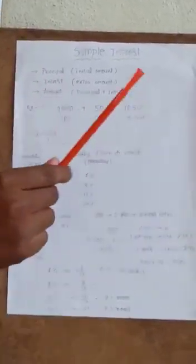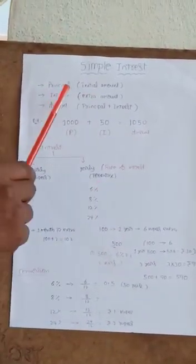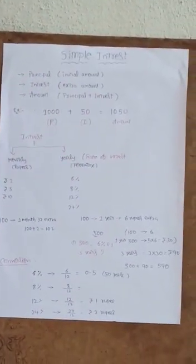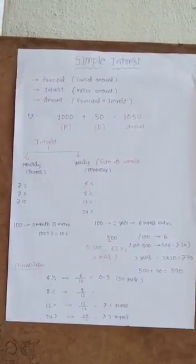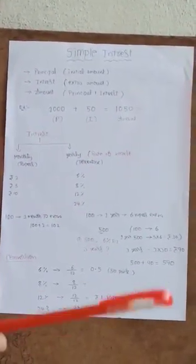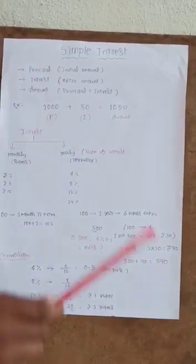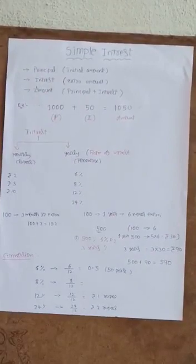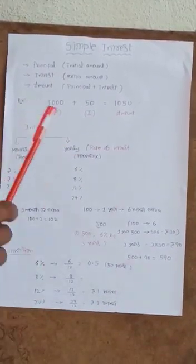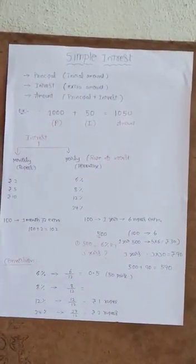Principal means the initial amount, that is called principal. Interest means the extra amount we have to pay on principal, that is called interest. The amount means the sum of principal and interest. So I will give you one example. For example, if I took 1000 rupees from my friend.